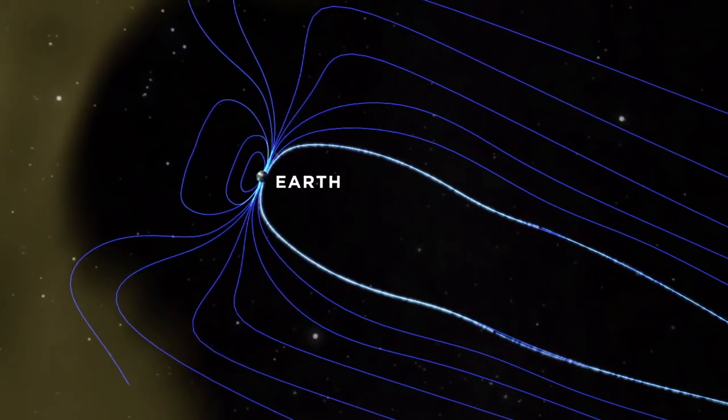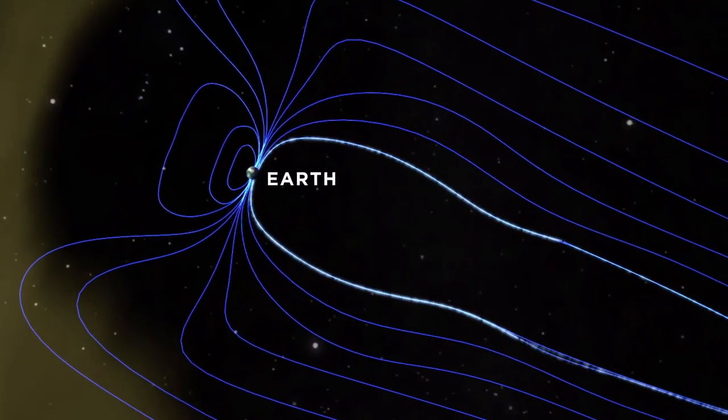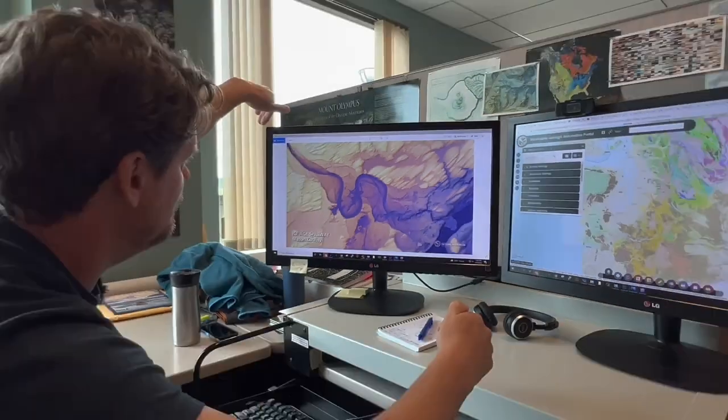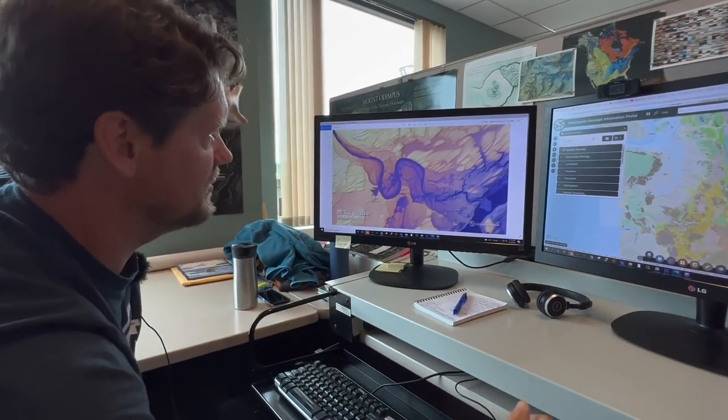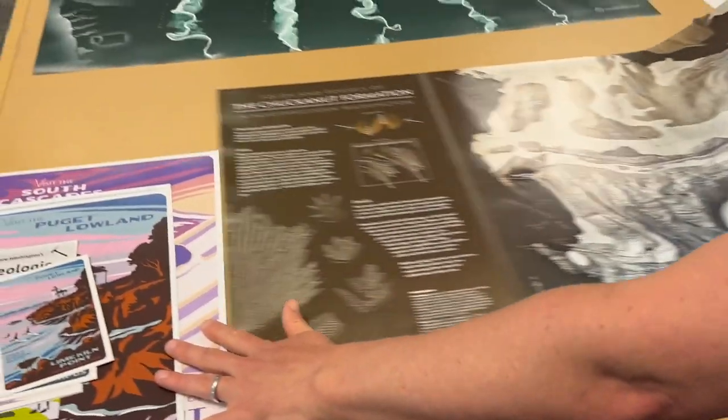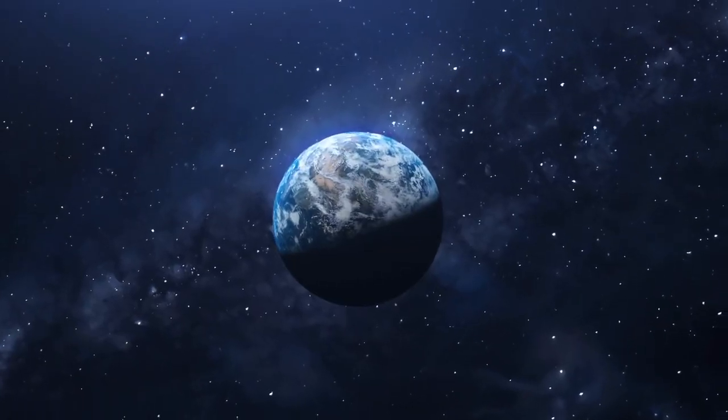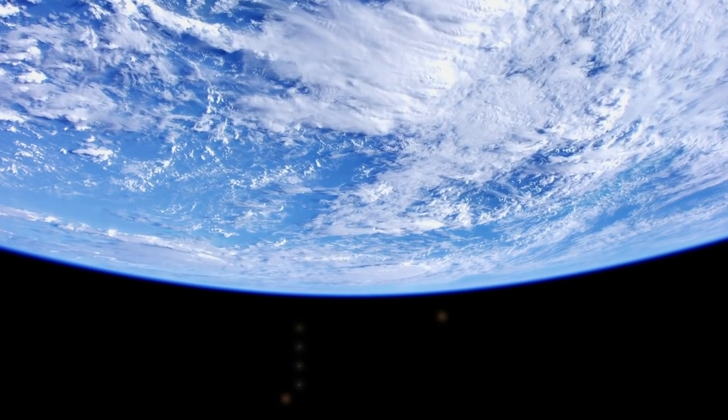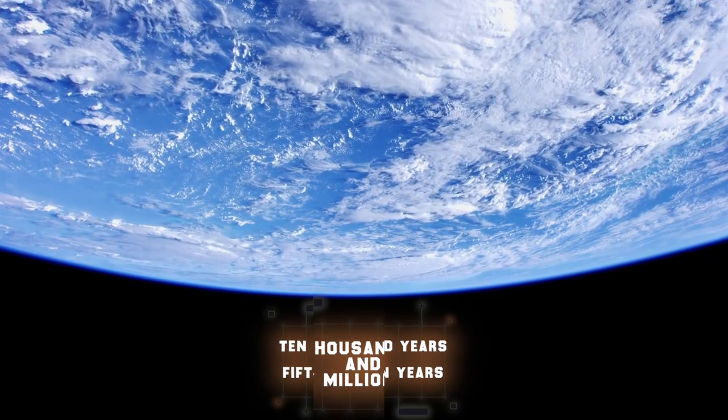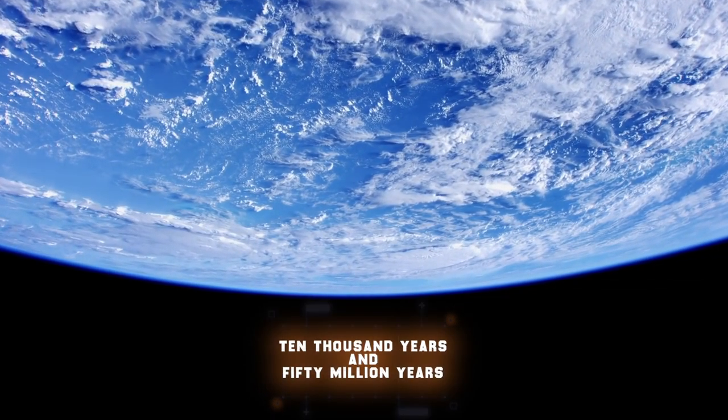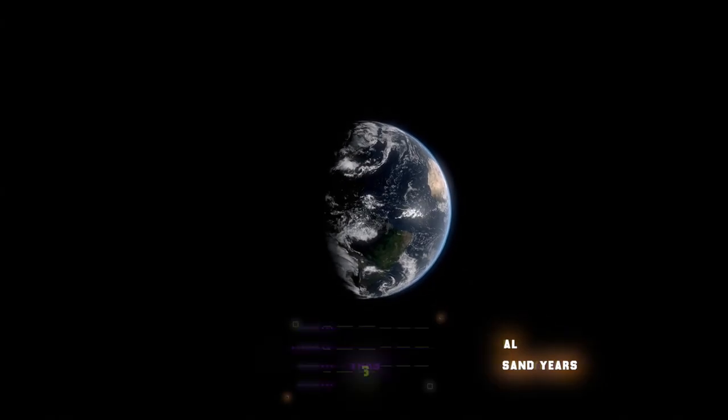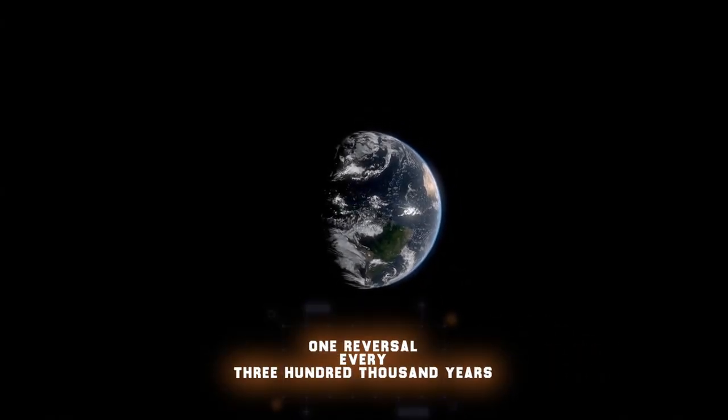Scientists don't know how or why this happens, but they have been able to figure out how many times it has happened in the past. Data from geological surveys have found that the Earth's magnetic field has reversed at least several hundred times in the past 160 million years, with time in between reversals ranging from as short as 10,000 years and as long as 50 million years, averaging out to approximately one reversal every 300,000 years.